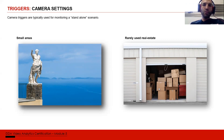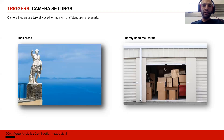We also have what we call rarely used real estate. For example, a storage room that's visited once or twice a year — it's not something commonly tracked. If we put a camera there, we don't really need an NVR, because when something happens we only need one or two days of footage — the rest of the year there's nothing there. So SD card recording is enough, and we can also use the camera for triggers.